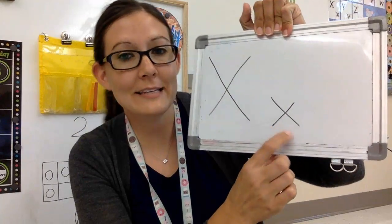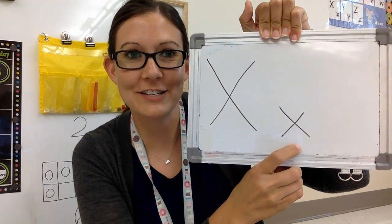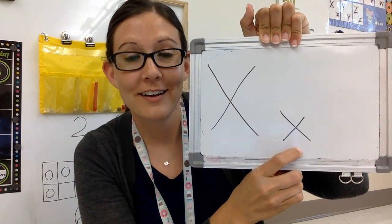Now I want you to keep practicing that. I want you to write the X and practice that sound. Okay. You can find X in your alphabet book as well. And remember lowercase X looks exactly like it. Just a little bit smaller. All right. Good job.